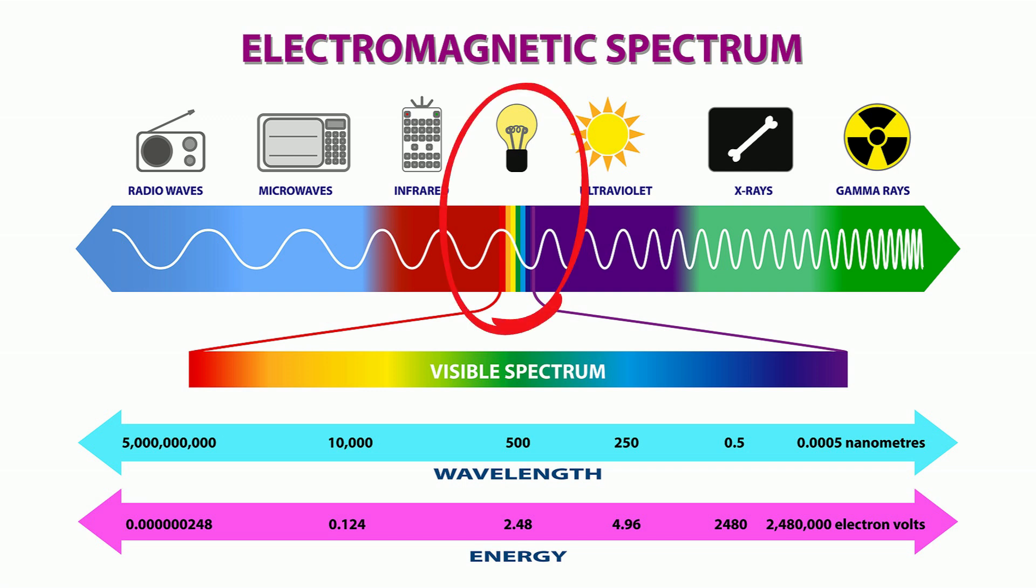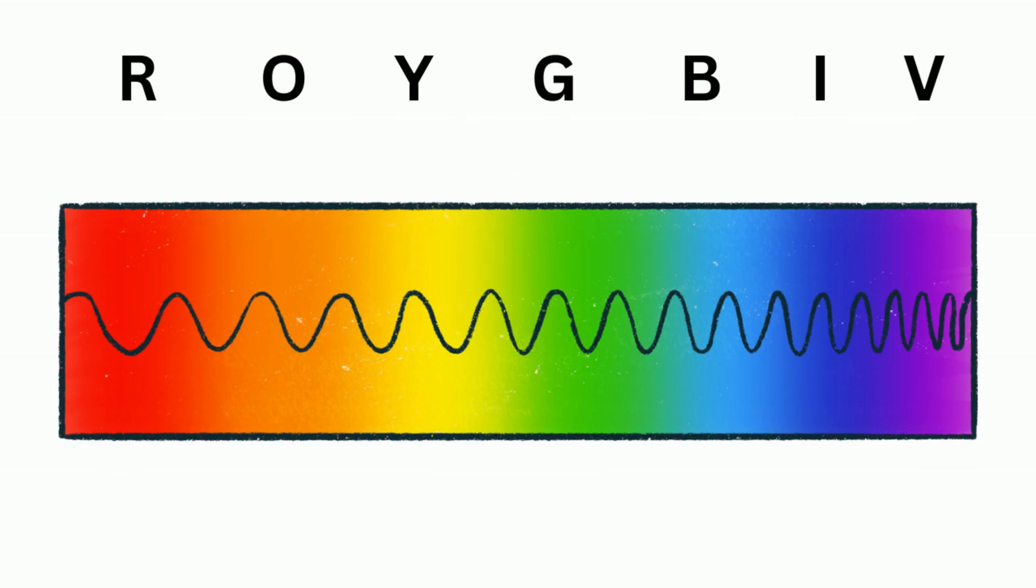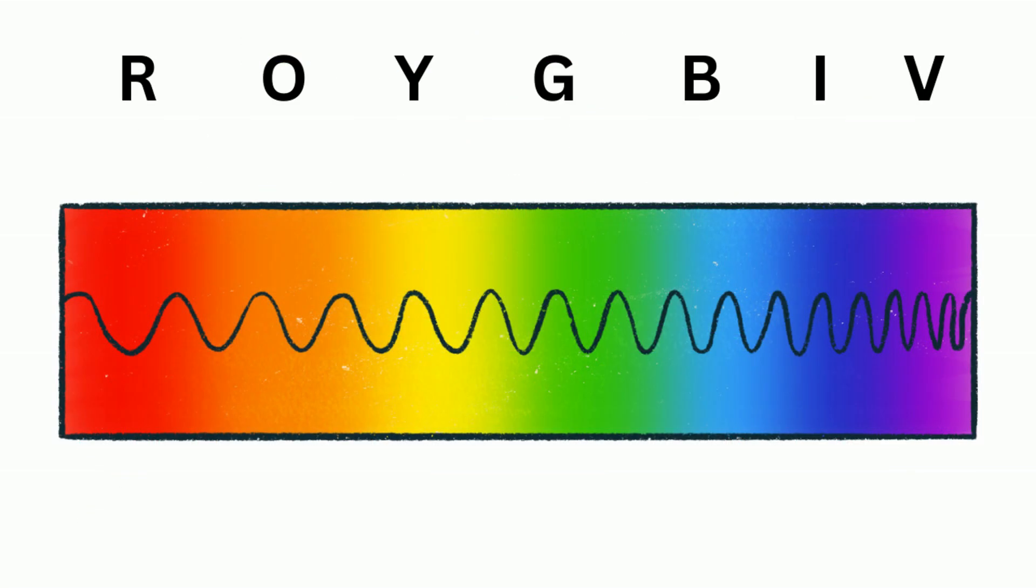An easy way to remember the different colors of light is to use Roy G. Biv: red, orange, yellow, green, blue, indigo, and violet.